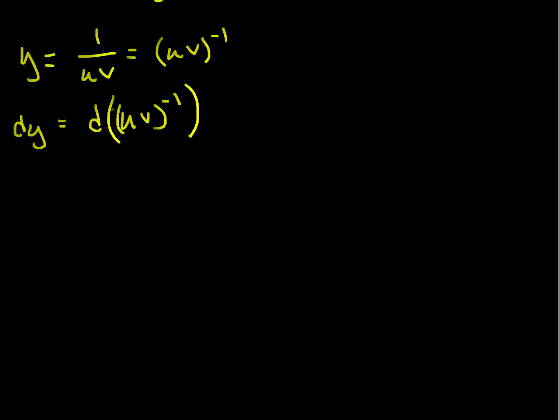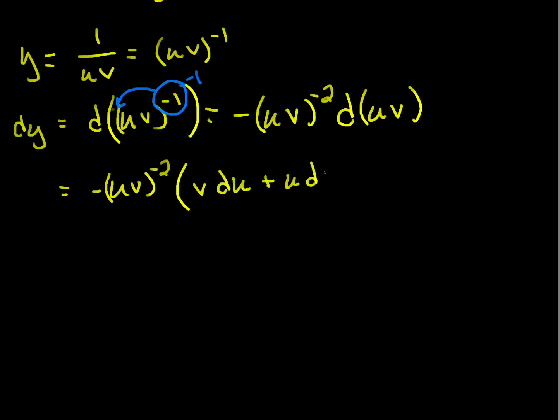And this is the power rule. So, my exponent comes down and will become my coefficient, and it reduces by 1. So, the power rule says that this is going to be negative uv to the negative 2 times the differential of uv. And now, I've got product rule. So, this is negative uv to the negative 2 times v du plus u dv. That's my product rule.